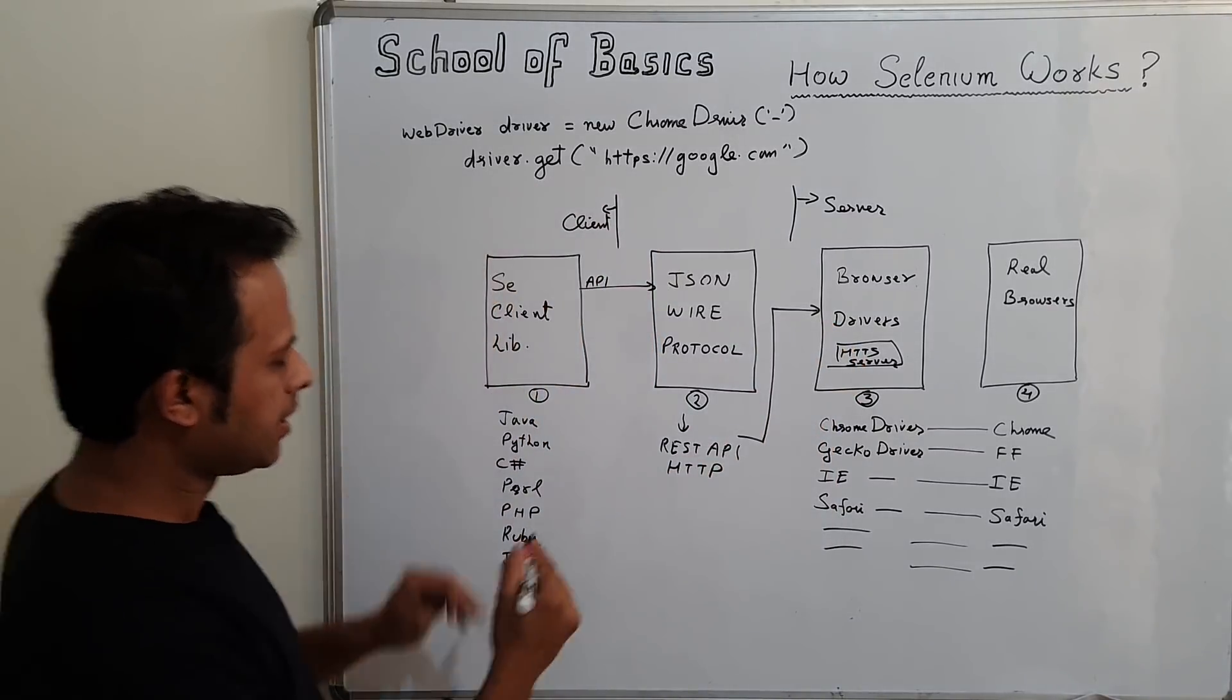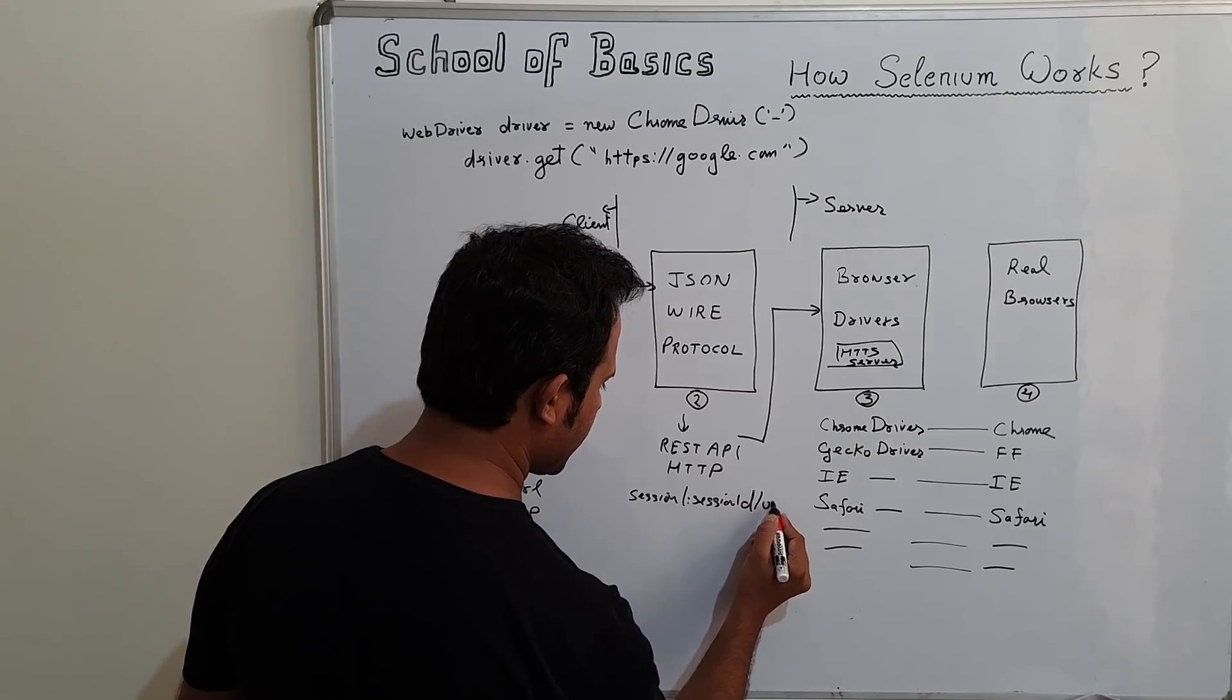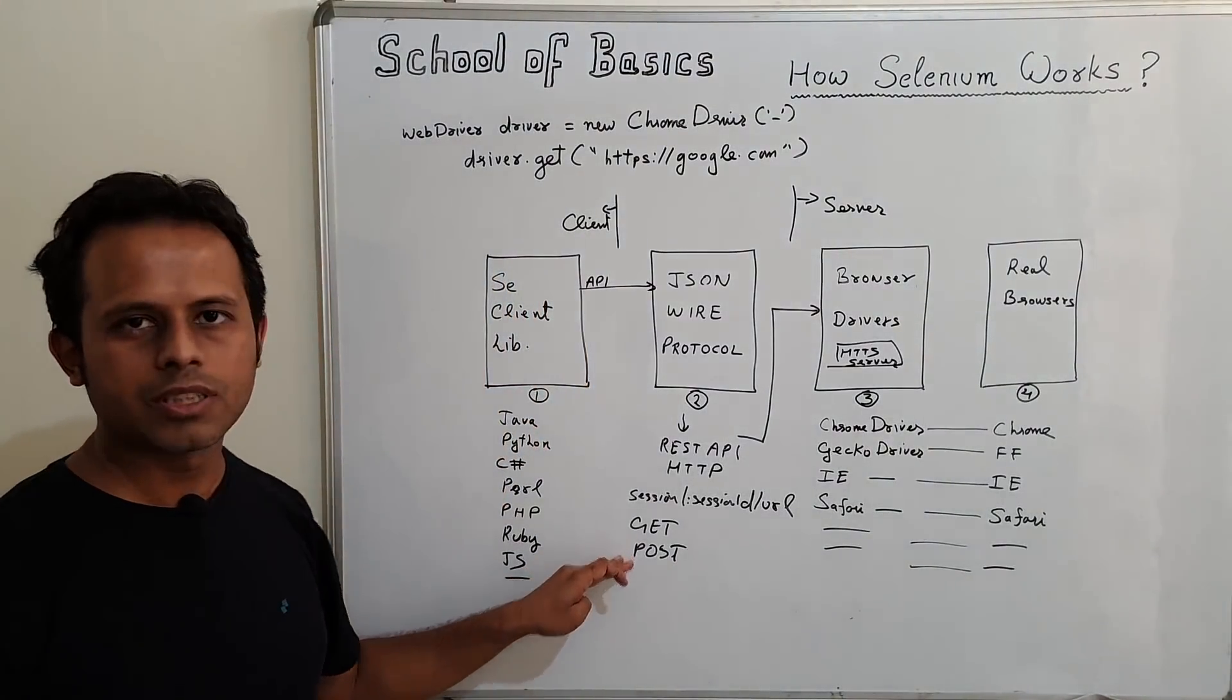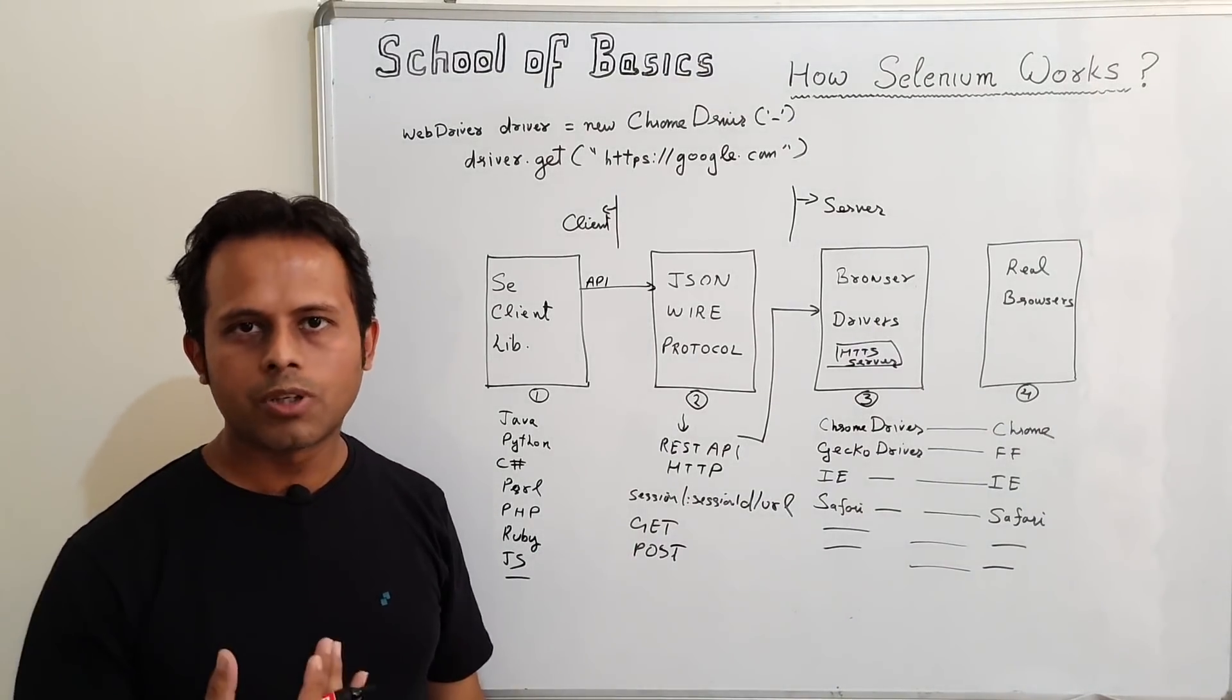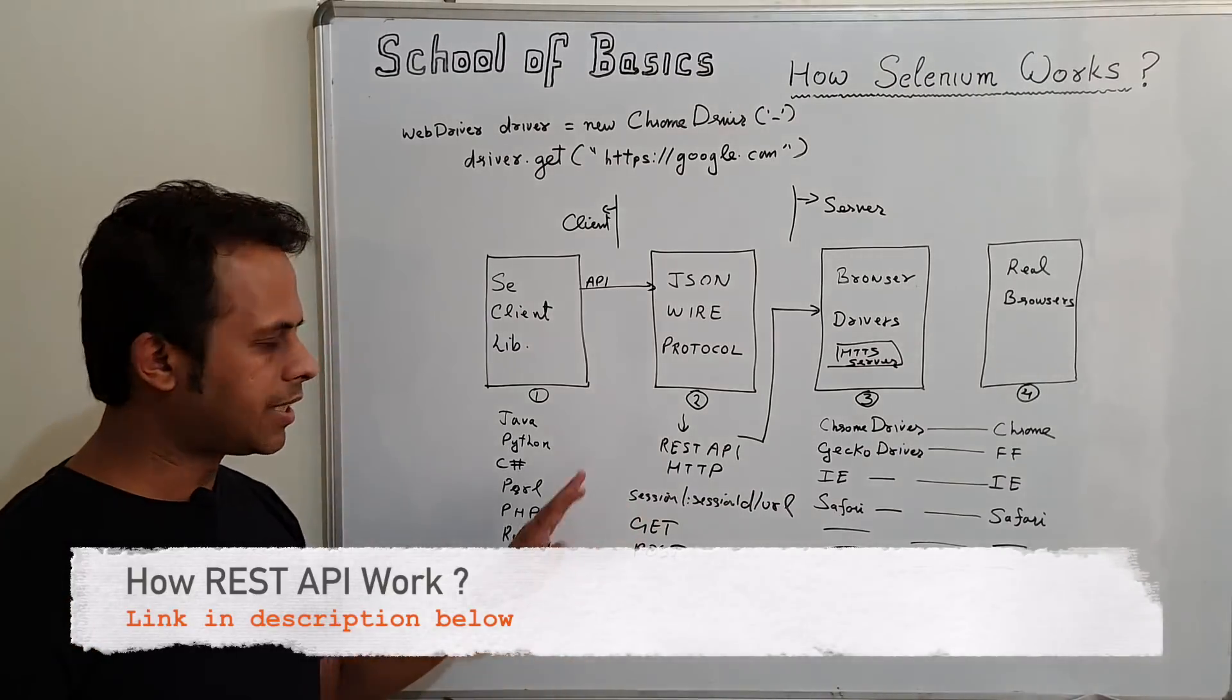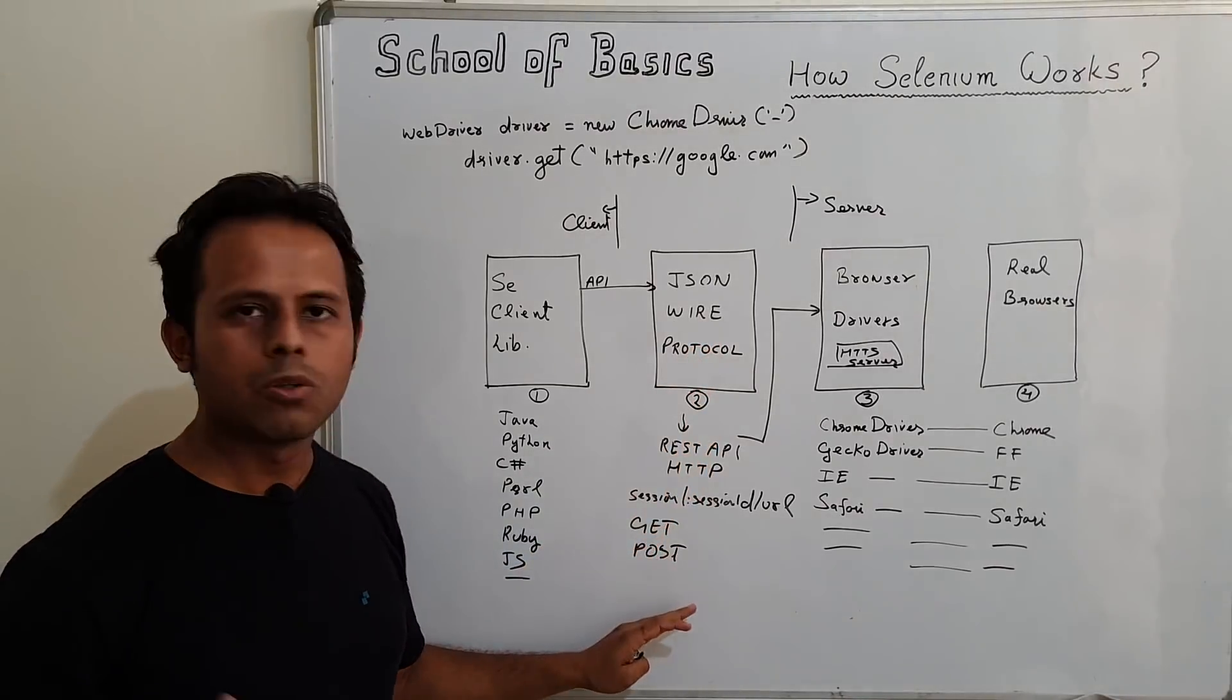For example, when we say get, there is an API called session, session ID forward slash URL. It can send a get or a post request. If we are navigating to a URL, it will send a post request. If we are fetching the URL from the browser, it can be a get request. Do not worry on the REST architecture. If you want to learn more on how REST web services work, I have a separate playlist on that. But for now, the information will get converted into a REST based URL that has JSON format and can work over HTTP.